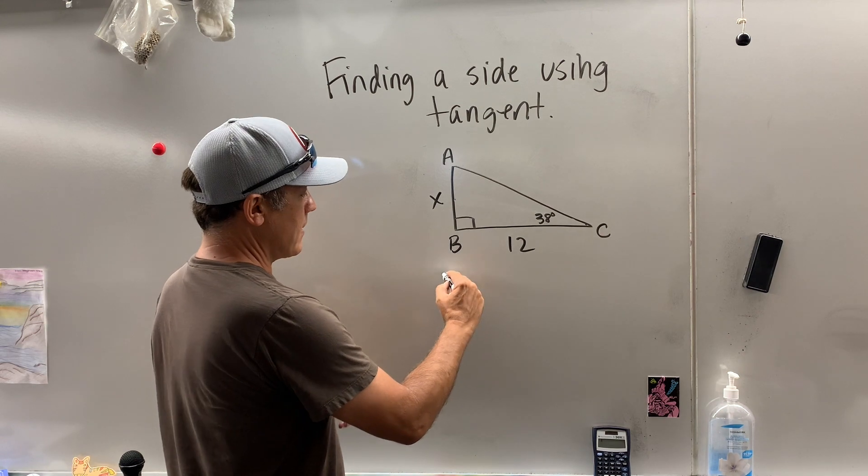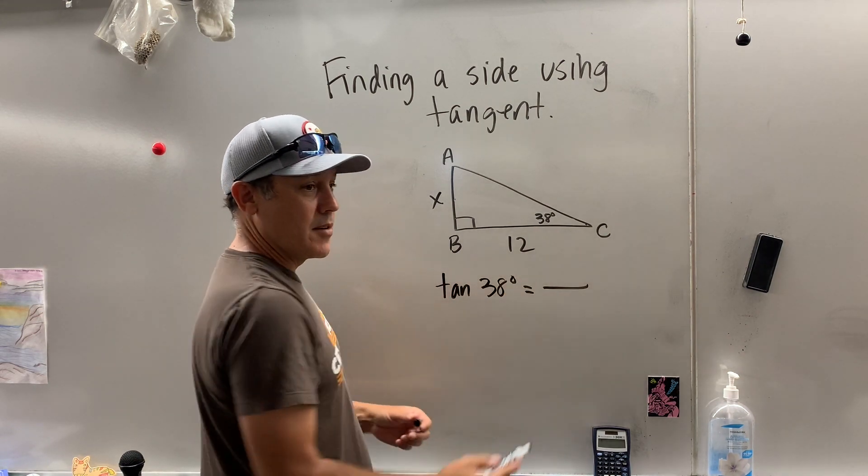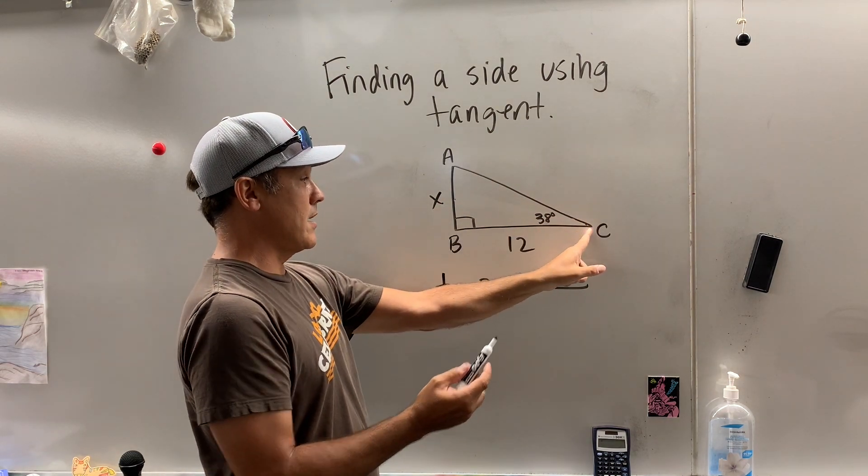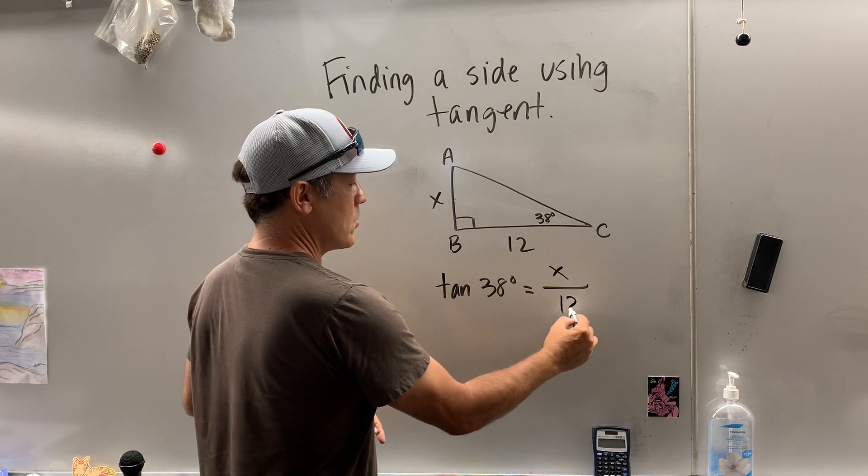So remember, the tangent of an angle, tangent of 38 degrees, is equal to some ratio which is opposite over adjacent. So my fingers here, what's opposite: x, what's adjacent: 12.